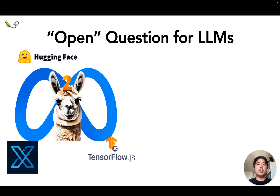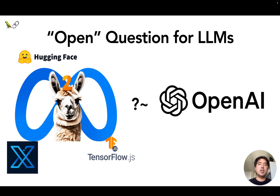One thing all of the previous models and frameworks have in common is that they're all open source, which is a prerequisite to running models in the browser because they run locally on a user's machine. LLMs, on the other hand, have been to date pretty dominated by private companies with pockets deep enough to train powerful models, like OpenAI, Anthropic, and Google. An open question is whether the best open source LLMs can compete with the likes of GPT-4, Claude-2, and PaLM, or at least approximate enough functionality for a wide enough variety of use cases.